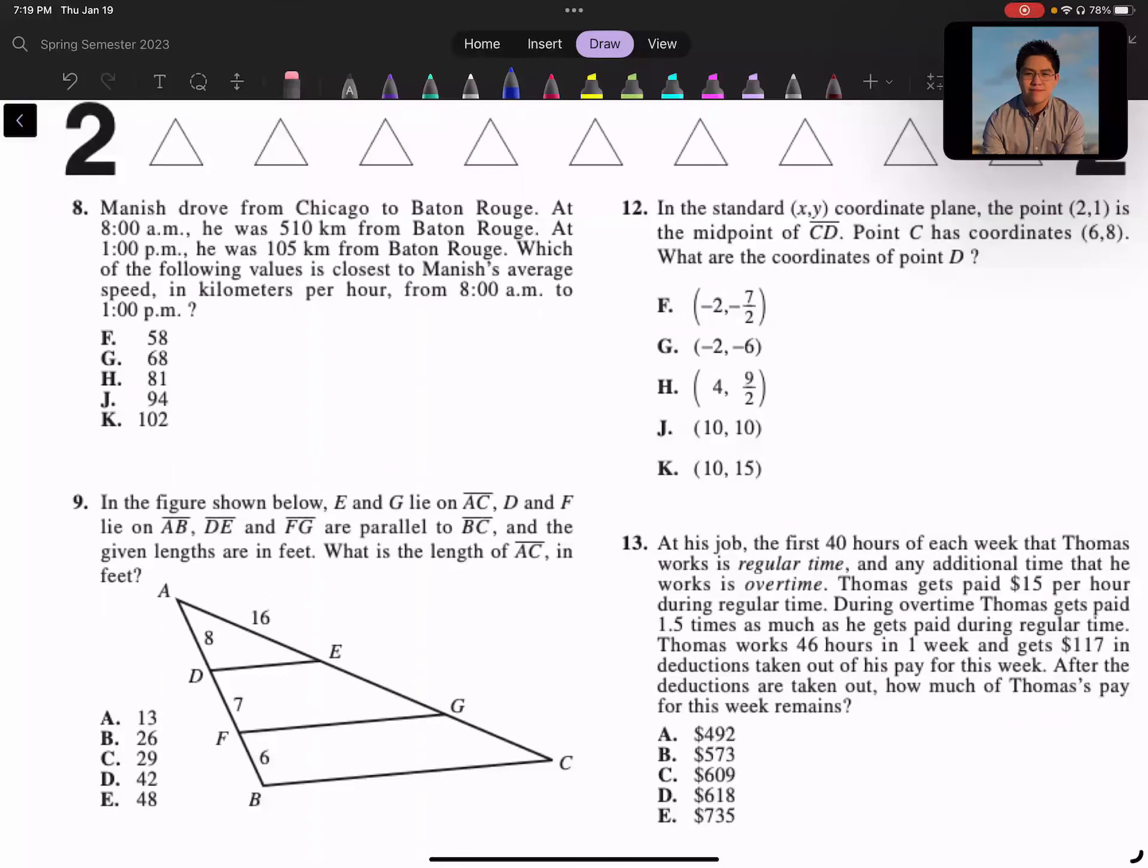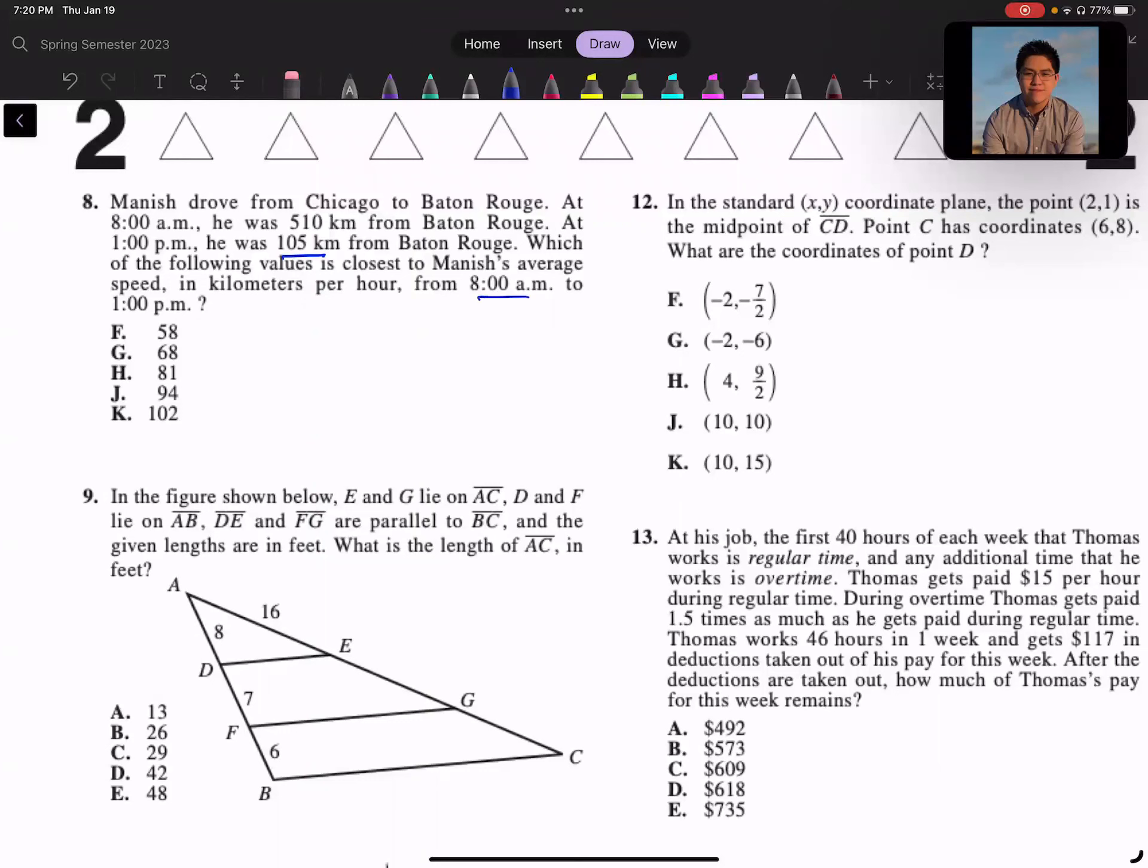All right, number 8. Viniste drove from Chicago to Baton Rouge. At 8 a.m., he was 510 kilometers from Baton Rouge. At 1 p.m., he was 105 kilometers from Baton Rouge. Which of the following values is closest to the average speed of Viniste's car in kilometers per hour from 8 a.m. to 1 p.m.? So we want to find the average speed. To find average speed, we need to know how many kilometers per hour. So we have to figure out how many kilometers he traveled. So we're breaking this down.